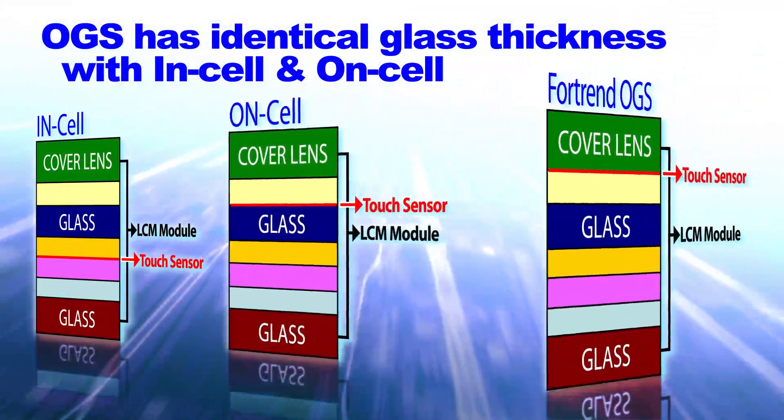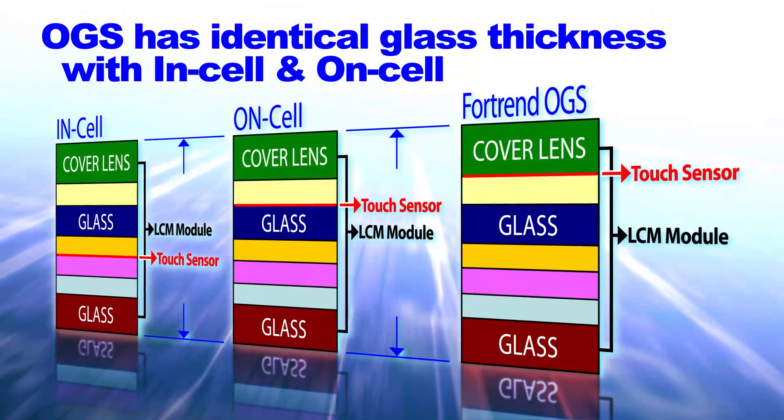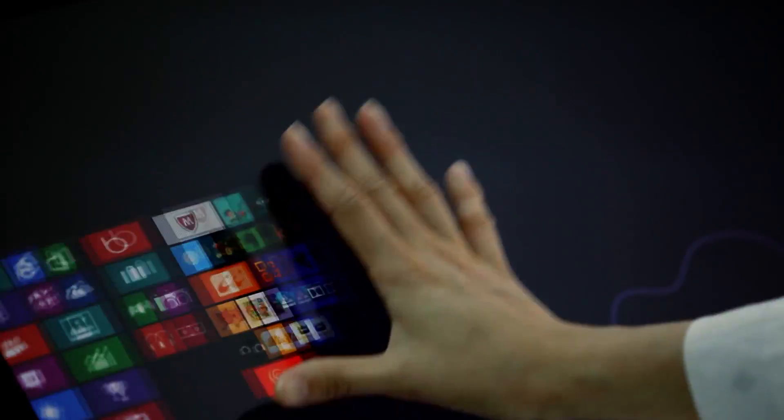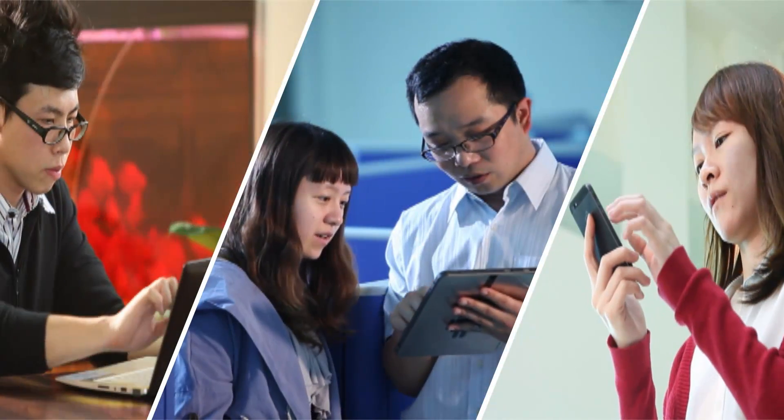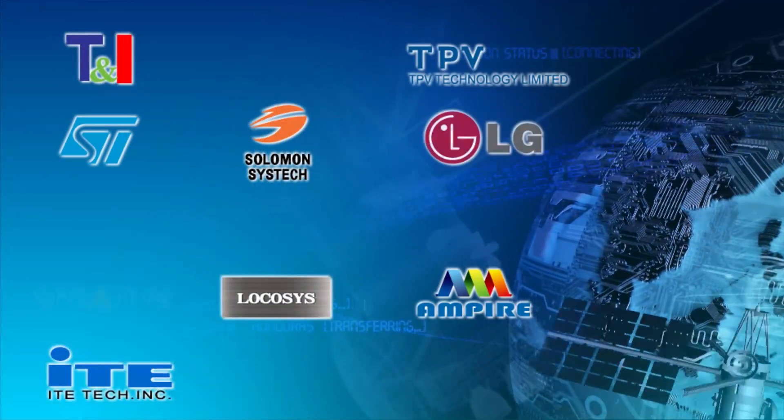The OGS has identical glass thickness with in-cell and on-cell process, but the Fortran OGS has higher yield rate and lower cost at the same product dimension, has been approved by WIN8 and won many global 3C big brand names choice for their products.